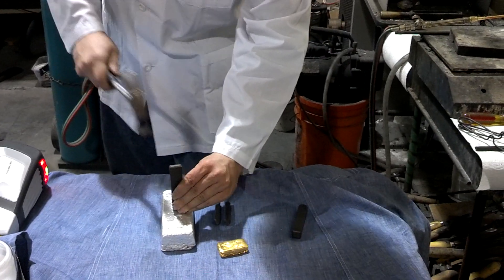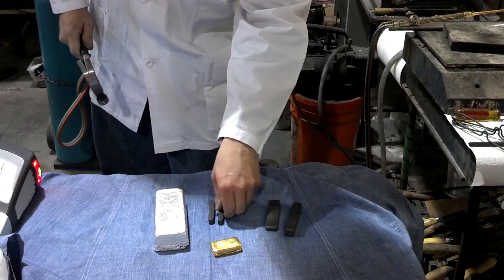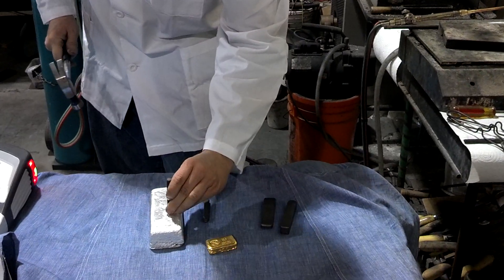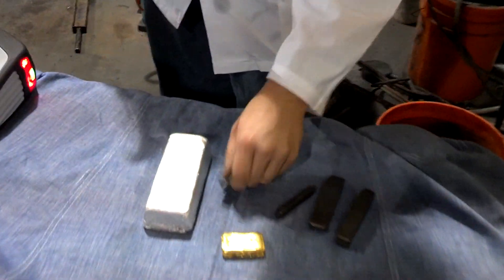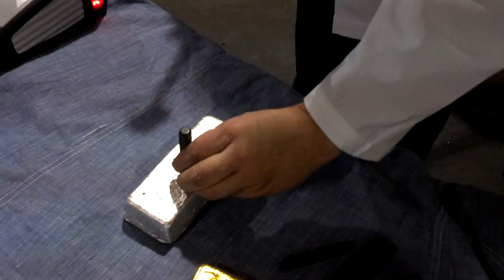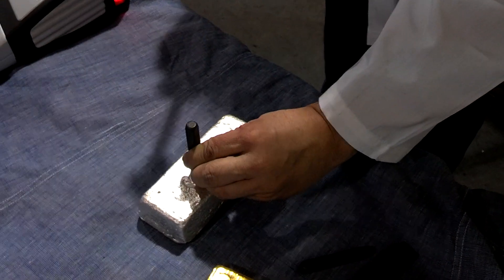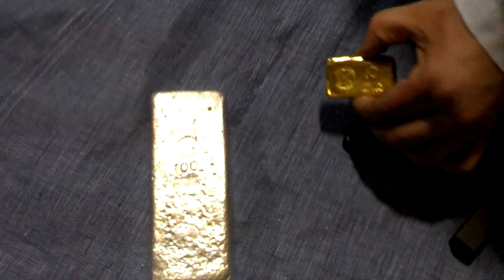The number of troy ounces of silver, and in this case it's 100. So one, zero, zero. And there we have it. One hundred troy ounces, 999 silver.